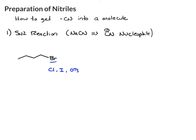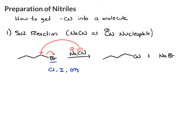So if you have a good leaving group and you react this with sodium cyanide — when you see the metal and the nonmetal, break that up: Na plus, CN minus. Na plus is just our spectator ion, CN minus is the nucleophile. For the SN2, CN attacks the carbon with a leaving group, the leaving group leaves. We get our product with the cyano group incorporated, plus sodium bromide as a byproduct.